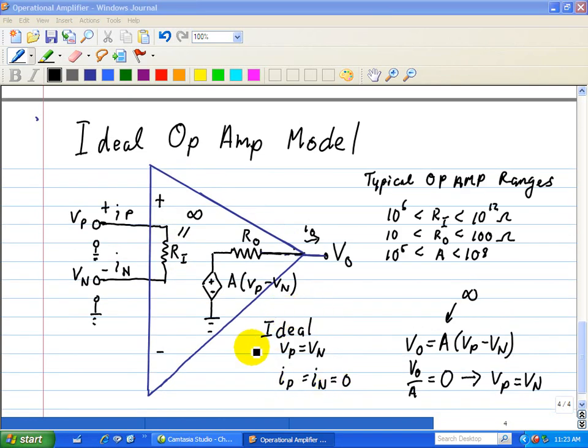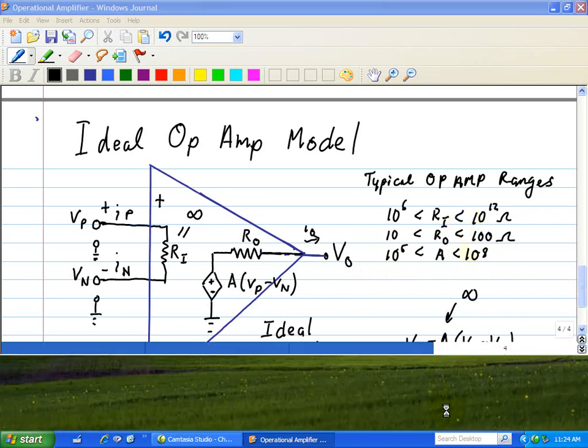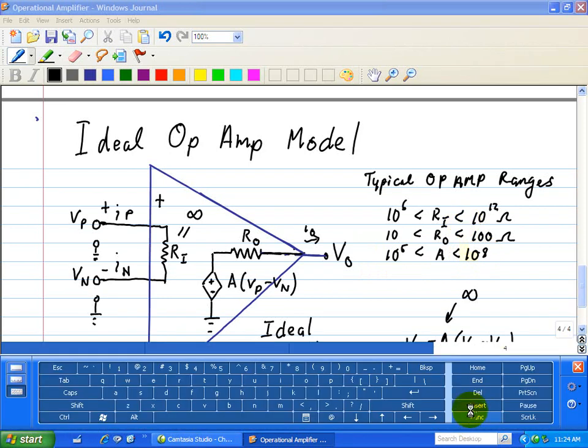So, to justify our ideal op-amp characteristics, let's look at some typical op-amp ranges. For the input resistance, shown here, ranges from 10 to the 6 to 10 to the 12 ohms. For RO, it's 10 to 100 ohms, so that's a very low value. So, most of the voltage supplied here, A times VP minus VN, is dissipated or is delivered as VO, where very little is dissipated as RO. And, most important, our gain is from 10 to the 5th to 10 to the 8th. So, these values give us a typical justification for ideal characteristics associated with the op-amp.